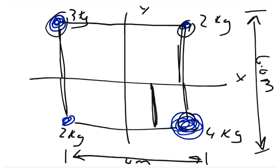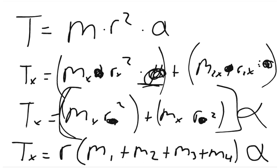We know what all the masses are. We've got 3 plus 2 plus 4 plus 2, so that equals 11 kilograms. So we've got the radius squared times 11 kilograms times the angular acceleration.